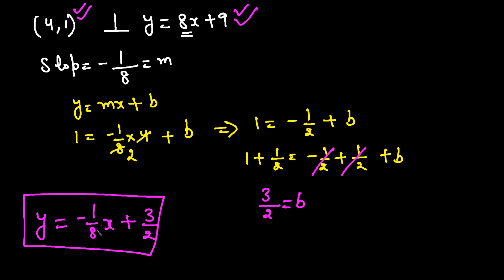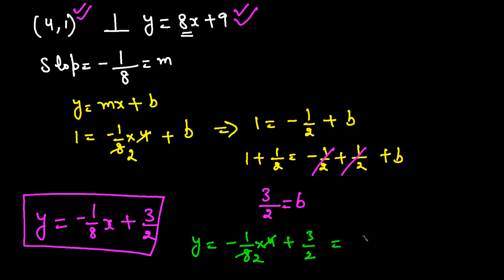We can check: plugging in x = 4, y = (-1/8)(4) + 3/2 = -1/2 + 3/2 = (3-1)/2 = 2/2 = 1. That matches the y-value in our point (4, 1), confirming the equation is correct.